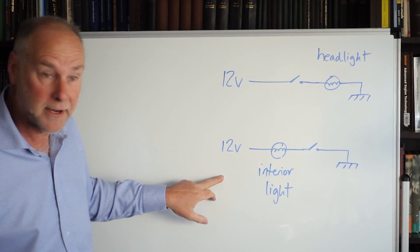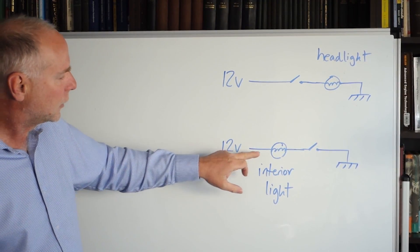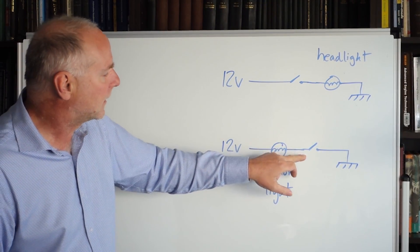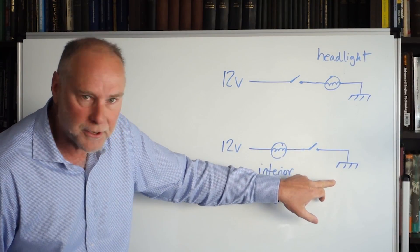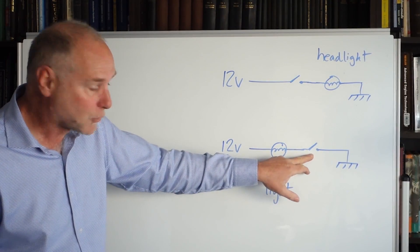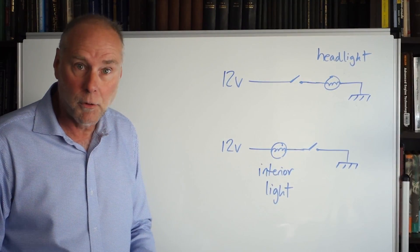Now, let's look at the interior light circuit. The 12-volt feed goes to the interior light, and then the other side of the light is switched to ground when you open a door. So that's the door switch. It closes when you open a door.